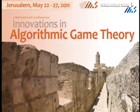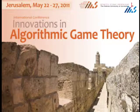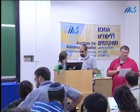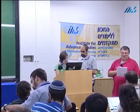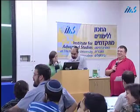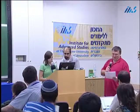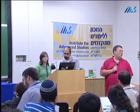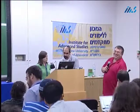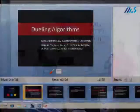The title is Dueling Algorithms, and I think Nicole certainly deserves the prize for the best title today. Peaches Lemons is also a great title — Nicole is number one and Peaches Lemons is number two. And what is this dominant strategy? I give you Nicole.